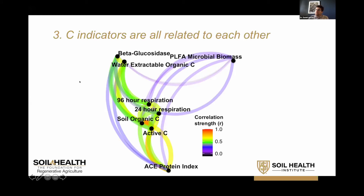Another way to look at these relationships is to try to predict each indicator from the other seven using forward selection stepwise regression. For four of the indicators, the best first predictor was active carbon, and except for water extractable organic carbon, there wasn't much information gained by adding additional indicators after the first one. So it appears these indicators are providing largely shared information about carbon in our database.